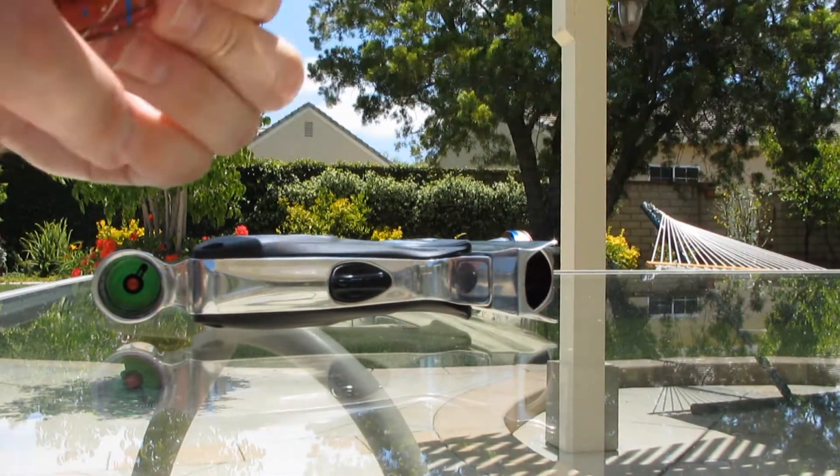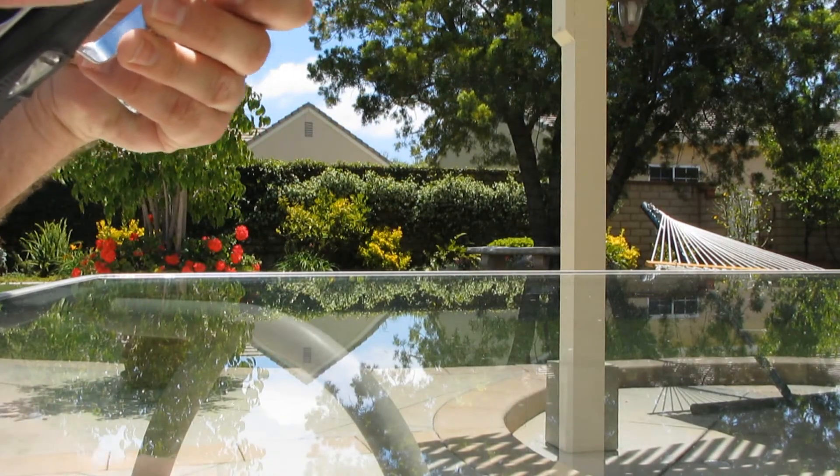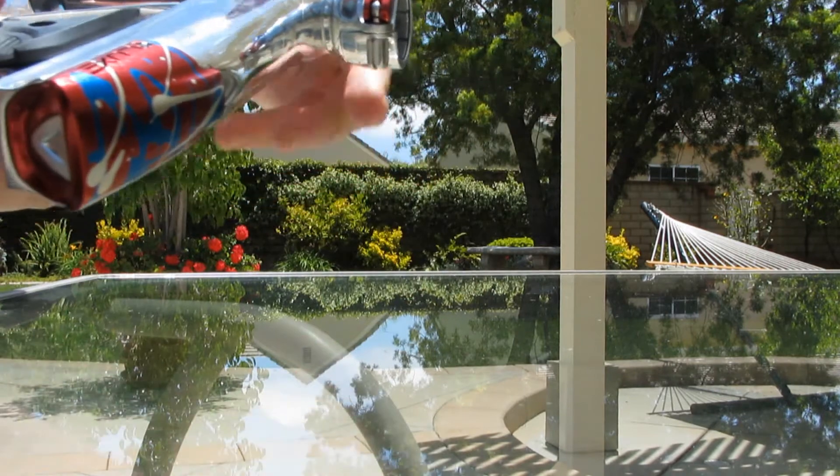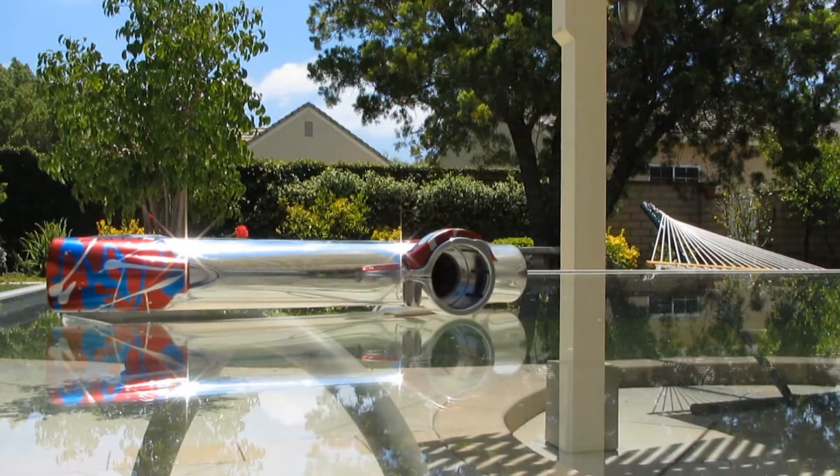So, as you can see, there it is. No spring on the bolt guide because we don't want that bolt to remain forward. Detents are brand new. The bolt's pushed back all the way. So, let's show you how this works.